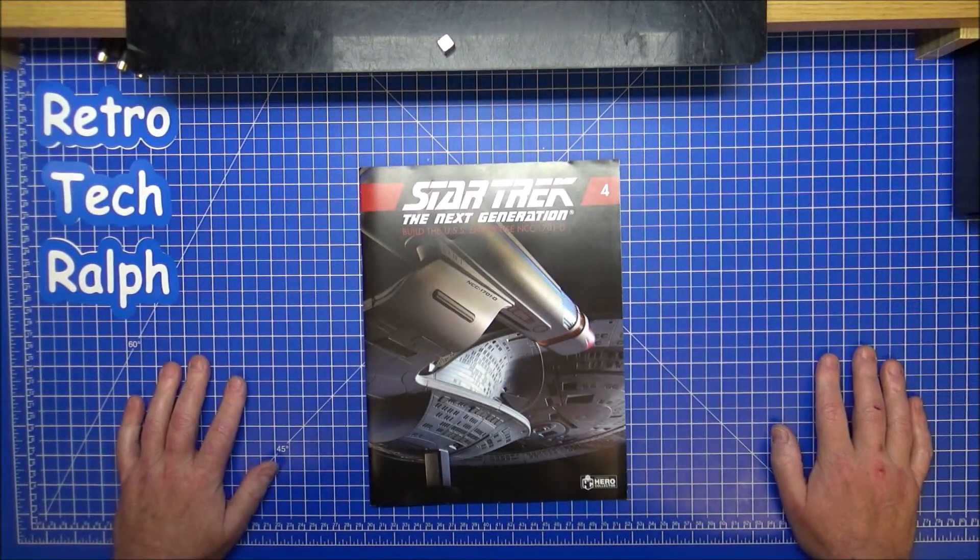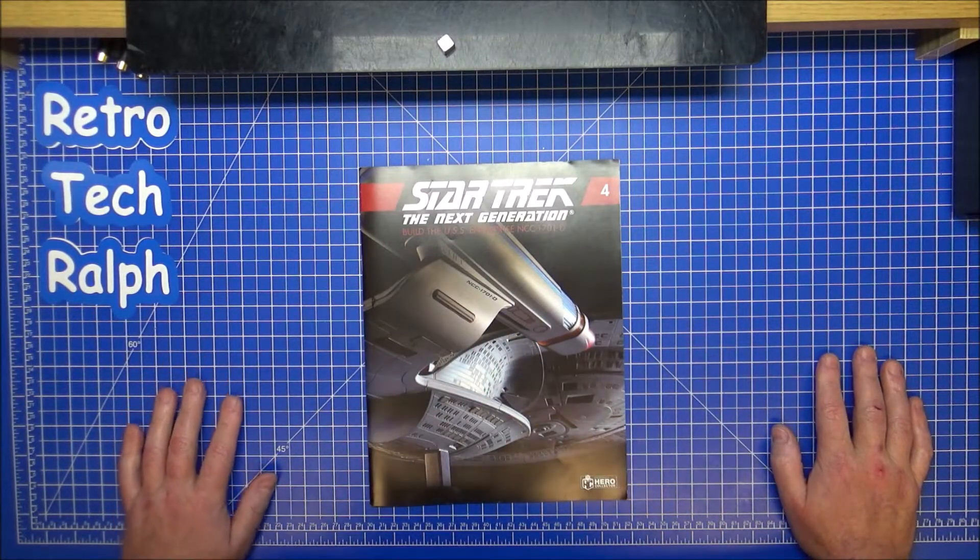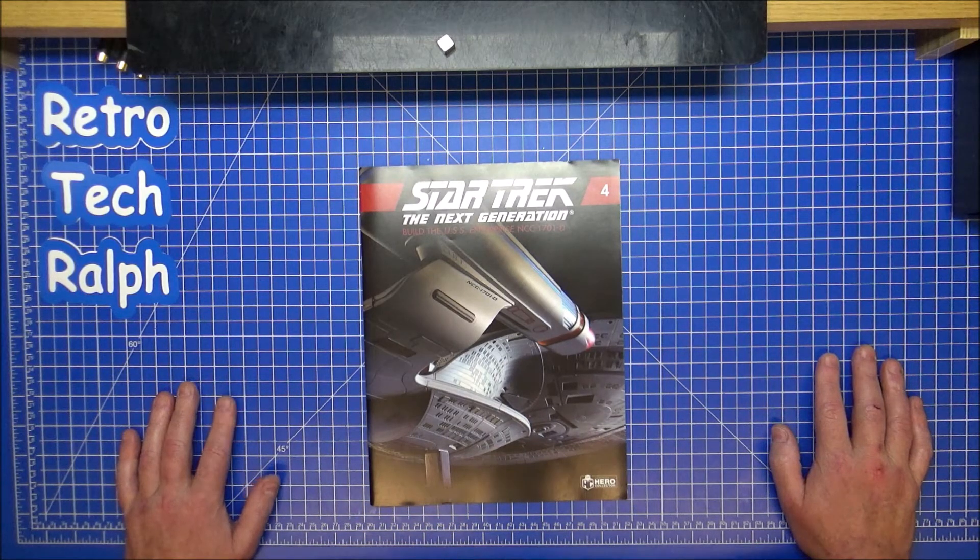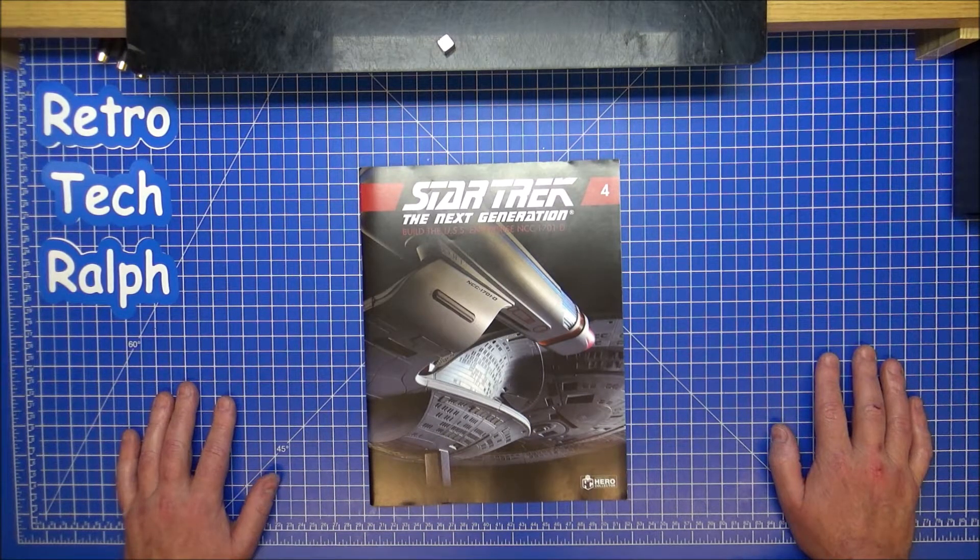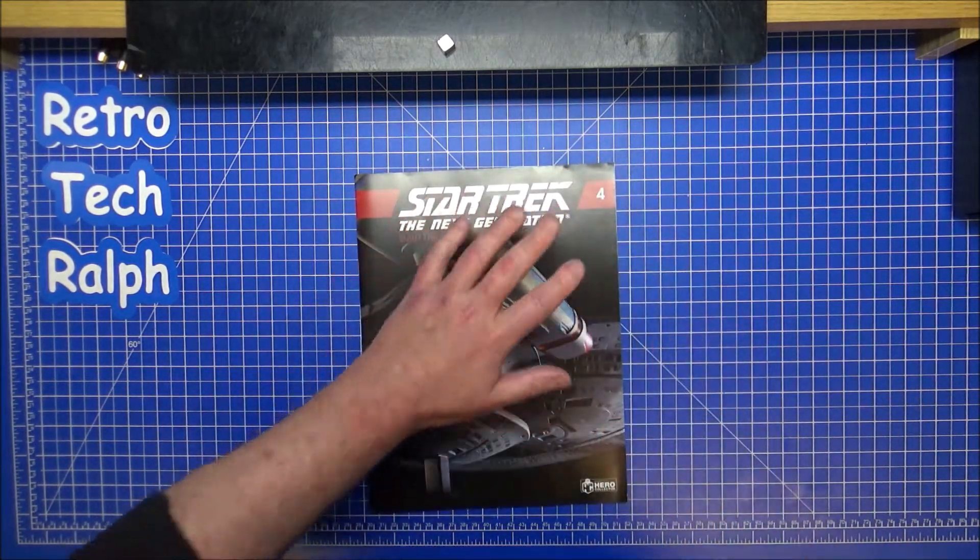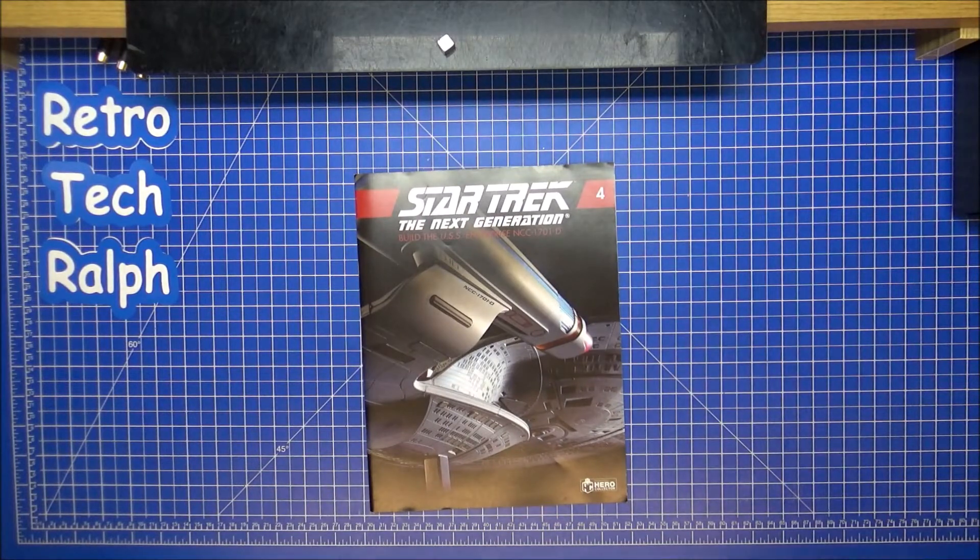Hi guys, Retro Trek Ralph here with another Star Trek The Next Generation build, the USS Enterprise NCC-1701-D by Eagle Moss Hero Collector. Now we're up to Magazine 4, which means it's the third delivery.